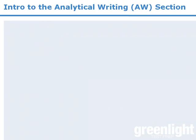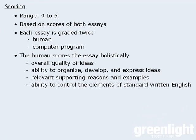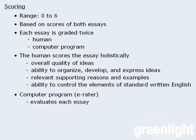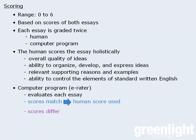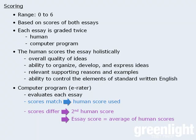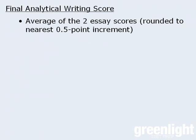The computer program that also scores your essays is called the e-rater. This program evaluates each essay, and if its score agrees with the human score, then the human score is used for that essay. If the scores disagree by a certain amount, then a second human grades the essay, and the final score for that essay is the average of the two human scores. Once we have scores for the two essays, the final score for the analytical writing section is the average of the two essay scores rounded to the nearest half-point increment.